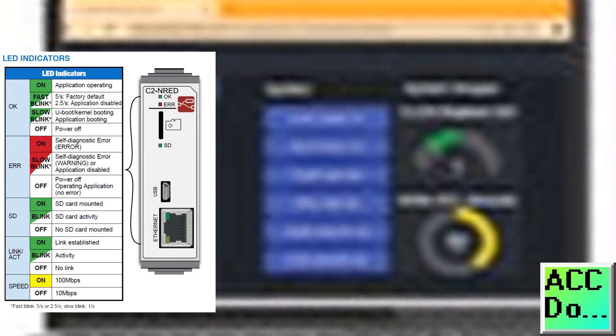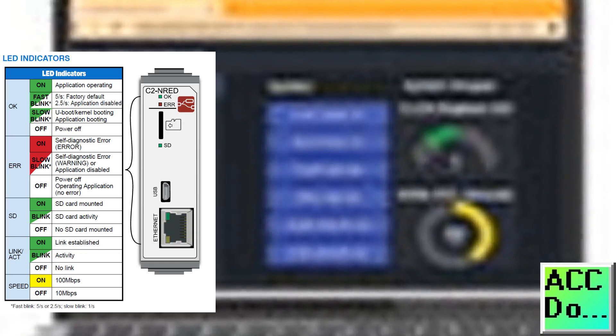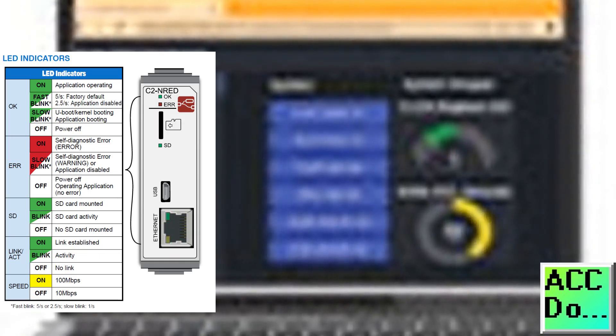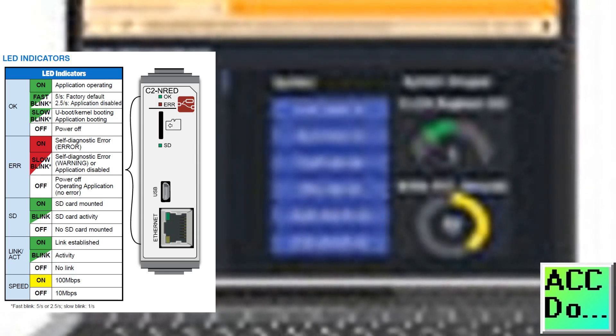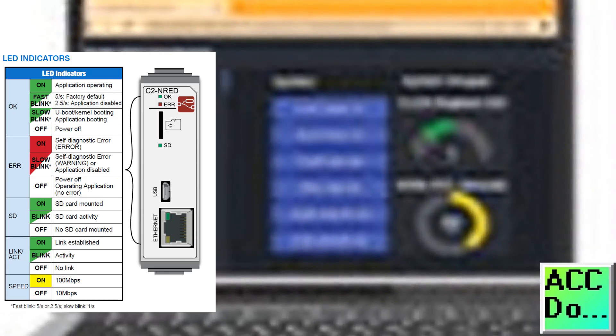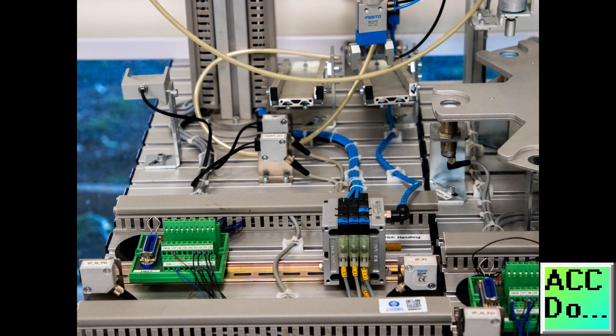One of the key advantages of using Node-RED with Qlik Plus is the ability to easily integrate plant floor data into existing business systems. This integration can include Manufacturing Execution Systems or Enterprise Resource Planning systems like SAP or Oracle. The visual nature of Node-RED makes it easier to create these integrations without extensive coding knowledge.